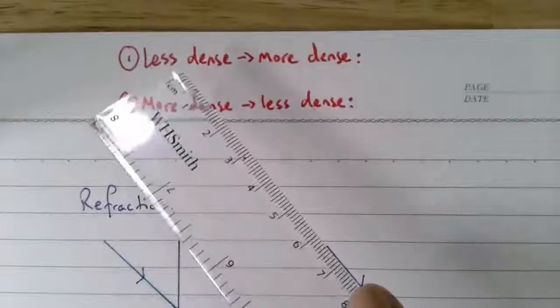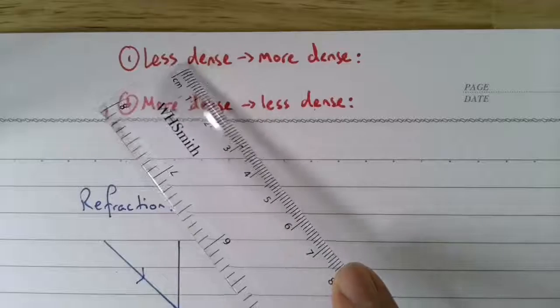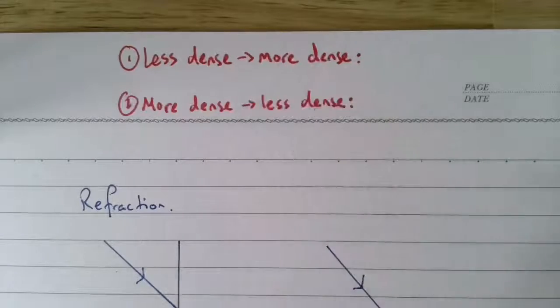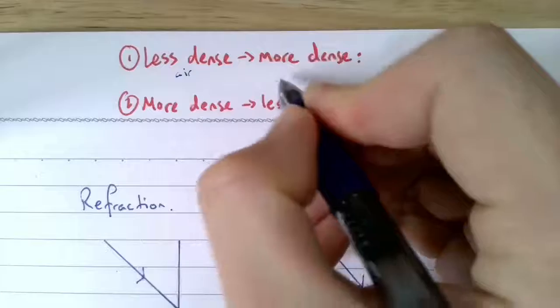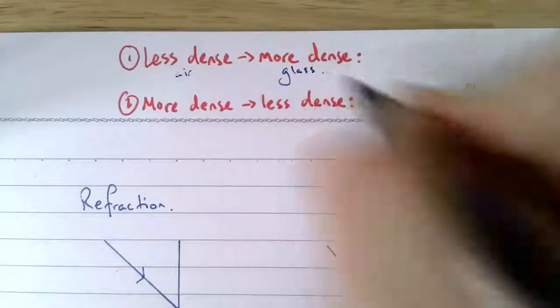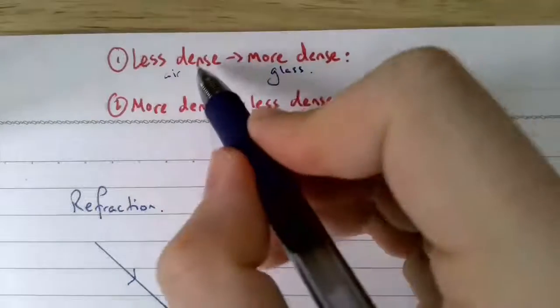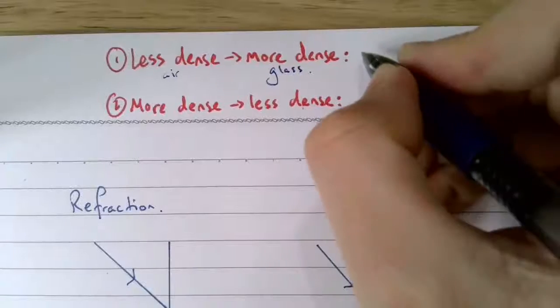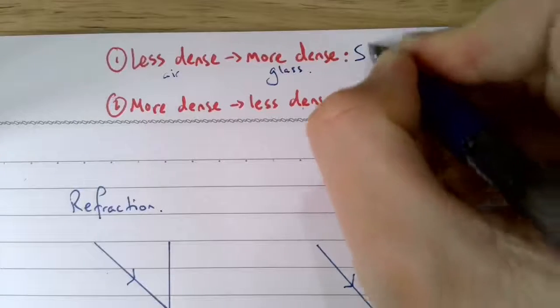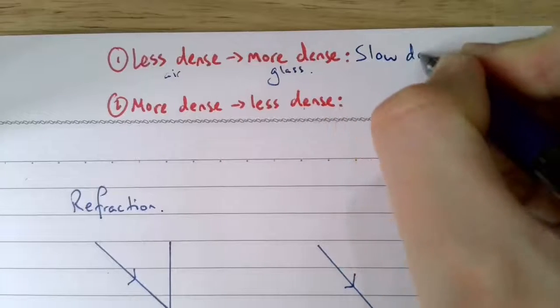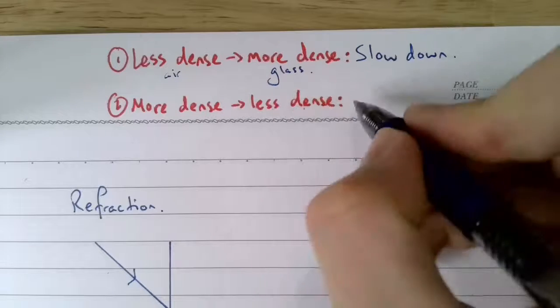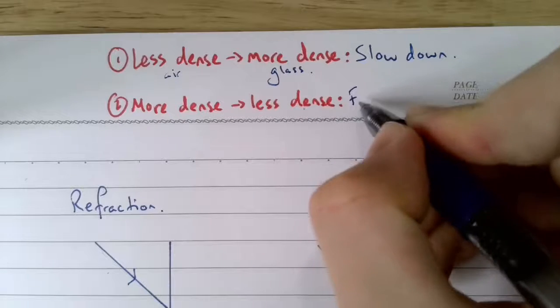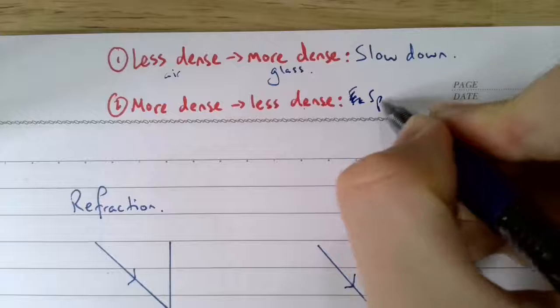There are two situations you need to know about. If we're going from a less dense material to a more dense material — for example, from air to glass — the light will slow down. If we go from more dense to less dense, the opposite: it will speed up.